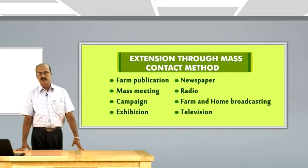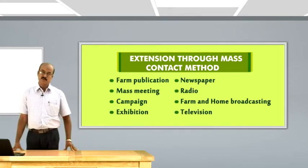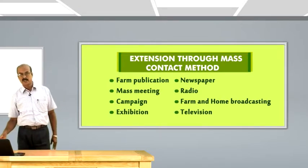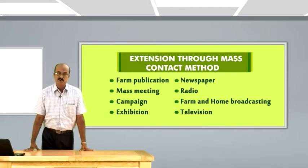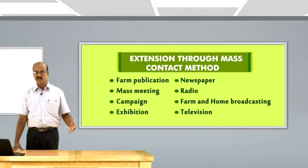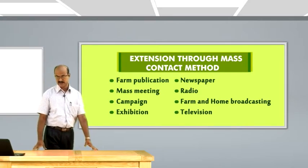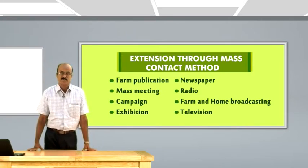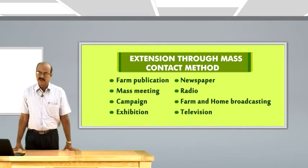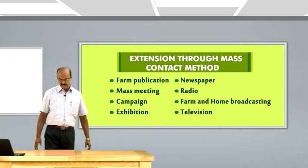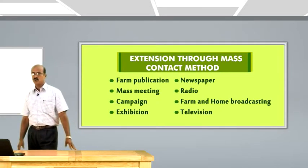The newspaper is another mass medium. Nowadays every newspaper prints information on agricultural technologies — latest information, day-to-day issues, or emergency situations. Scientists or subject matter specialists from KVK or researchers from various fields deliver information through newspapers in print form with wider circulation. Radio and television are now considered traditional media whose use is more limited because they cannot deliver location-specific or site-specific information.